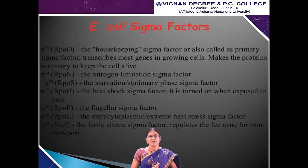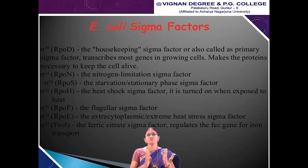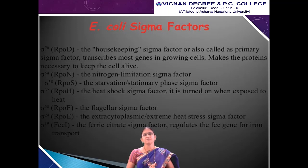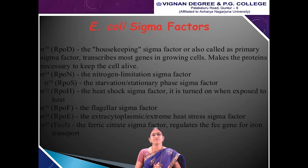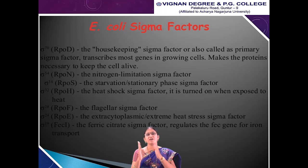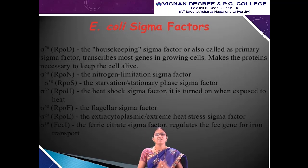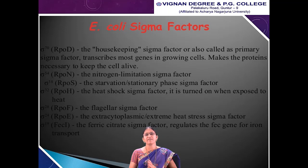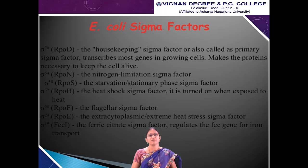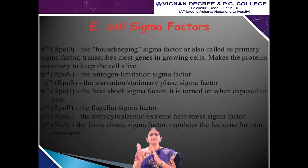These sigma factors each recognize specific sequences on the DNA. Sigma 70 is the housekeeping or primary sigma factor that transcribes most genes in growing cells, making proteins necessary to keep the cell alive. Sigma 54 is the nitrogen limitation sigma factor. Sigma 38 is the starvation or stationary phase sigma factor. The sigma 32 factor is the heat shock sigma factor, switched on when exposed to heat. Sigma 28 is the flagellar sigma factor. Sigma 24 is the extracytoplasmic or extreme heat stress sigma factor.